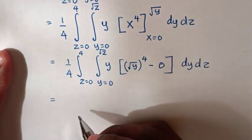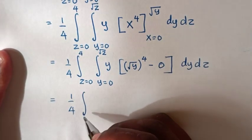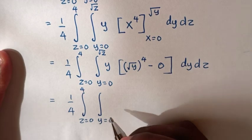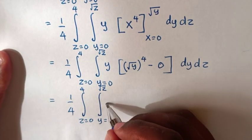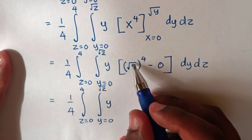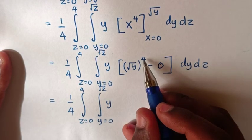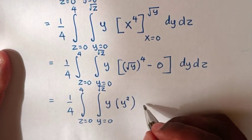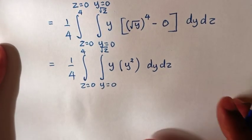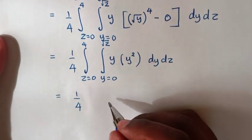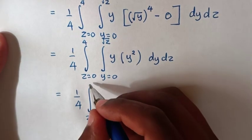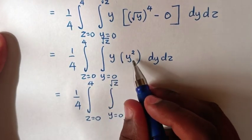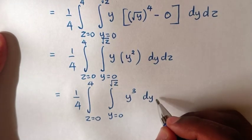This will be equal to 1 over 4, integral from z equals 0 up to 4, integral from y equals 0 up to square root of z. Here y times (square root of y)⁴ — since square root is the same as power 1/2, times 4 gives power 2 — so it will be y times y² minus 0, which gives y³ dy dz.